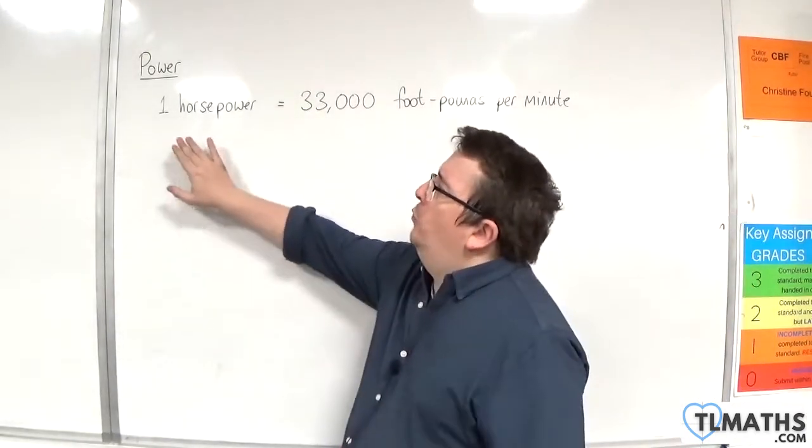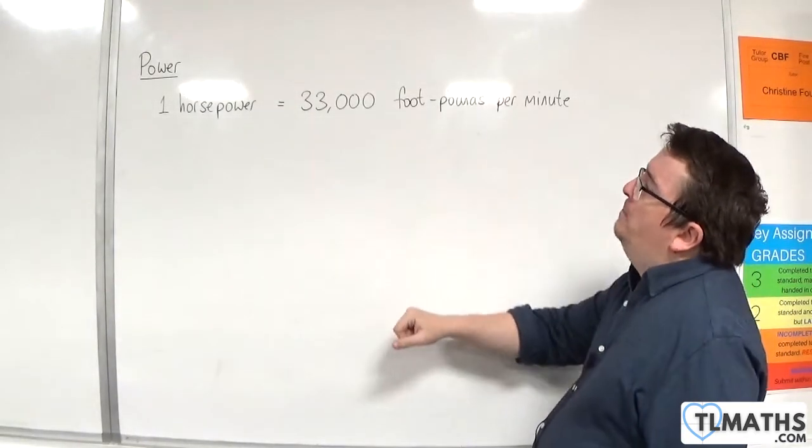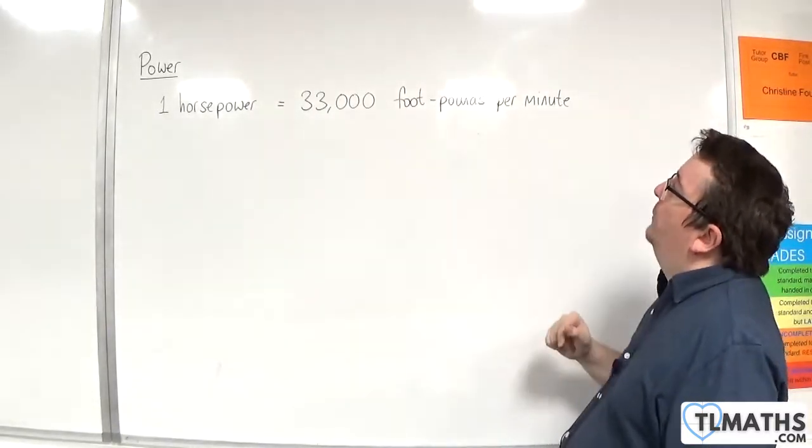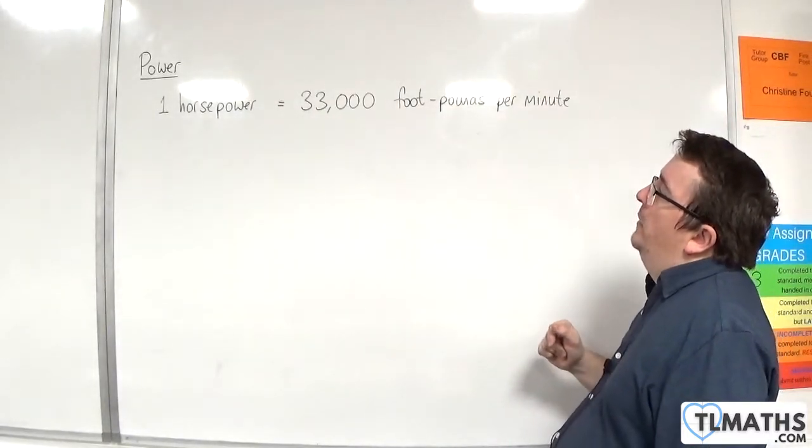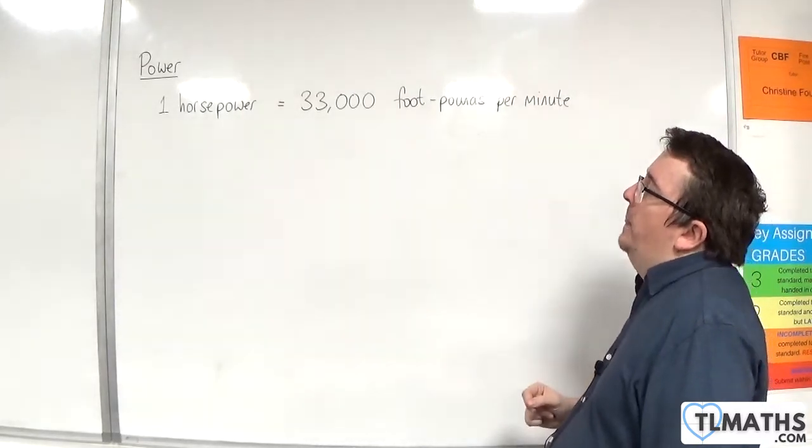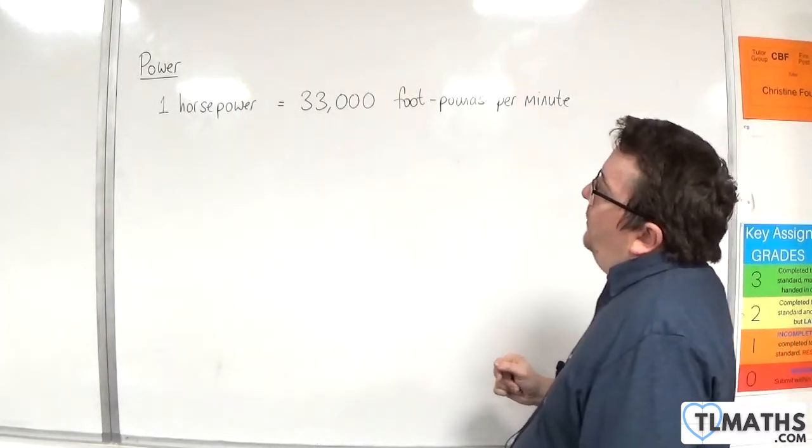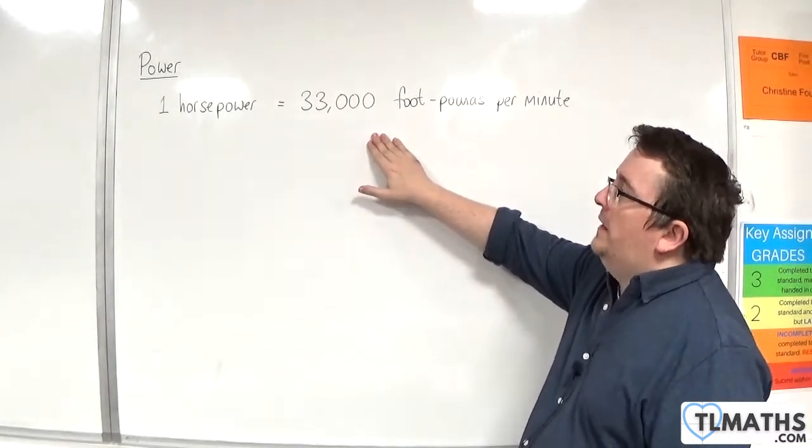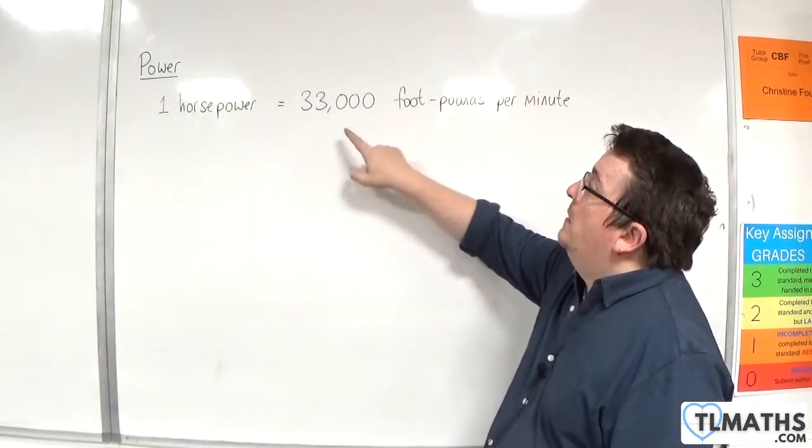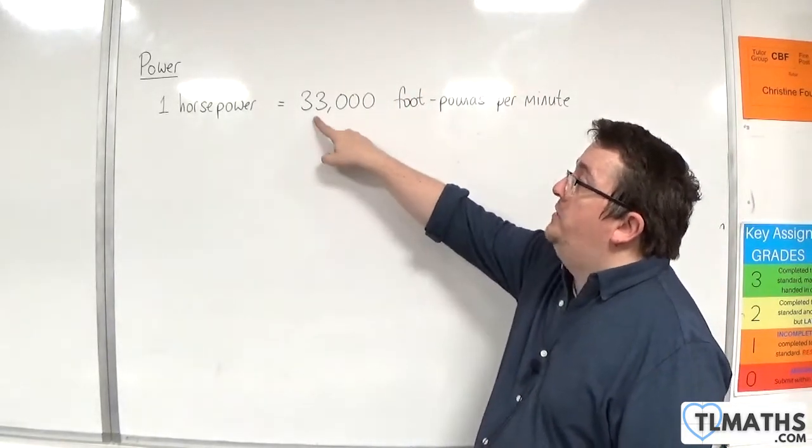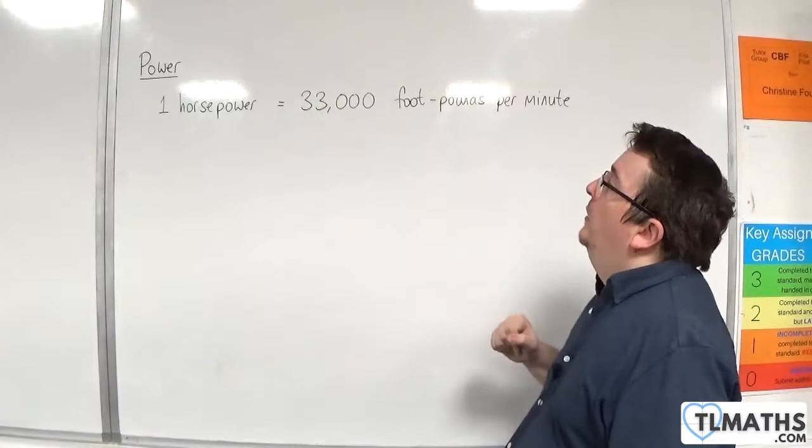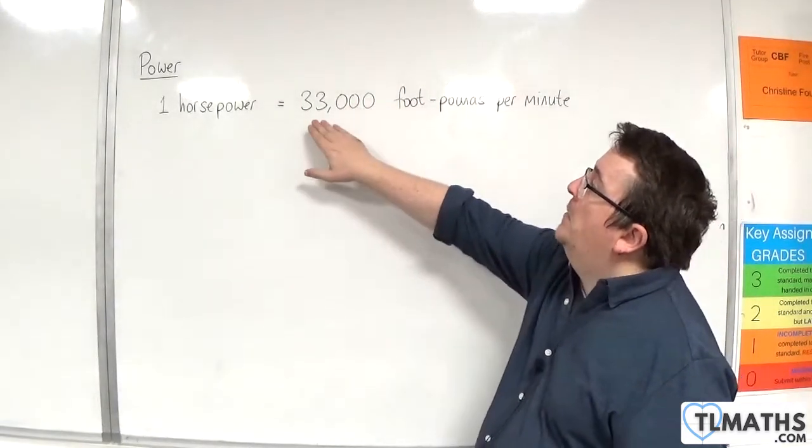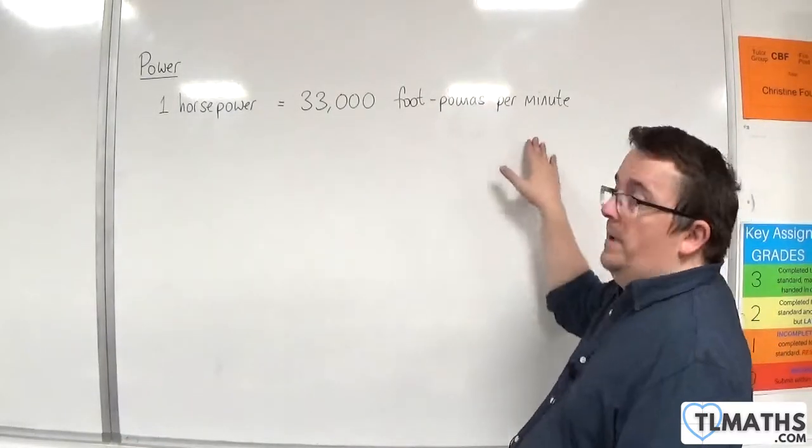So it was devised that one horsepower is actually representing 33,000 foot-pounds per minute. So what does that mean? Well, you could see this as 33,000 means pulling 1,000 pounds 33 feet, or 100 pounds 330 feet in one minute.